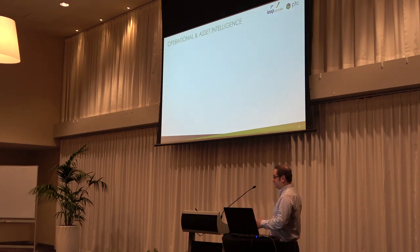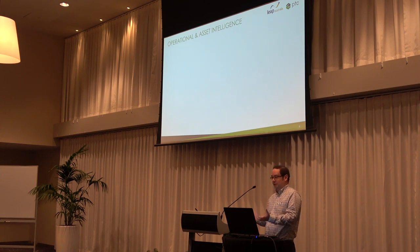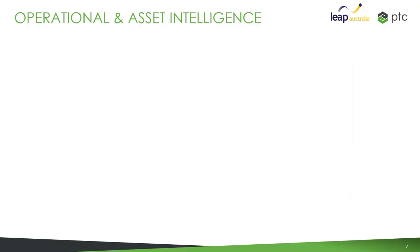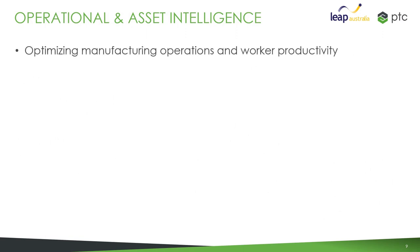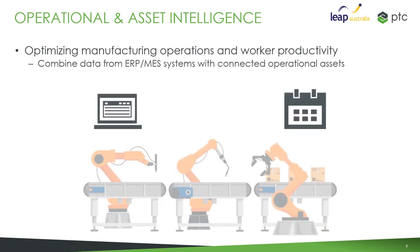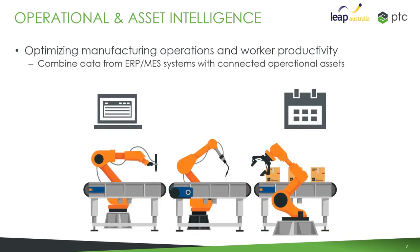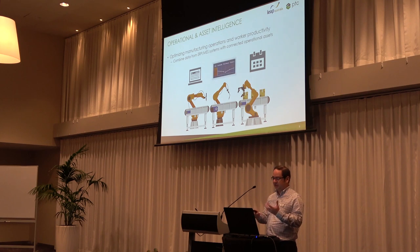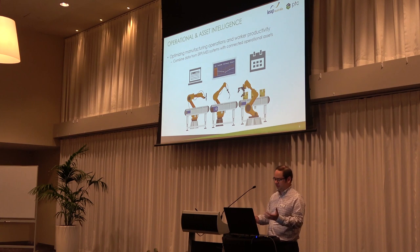On the operational asset intelligence side, we're really getting into the Industry 4.0 side of things - the factory floor. We're looking at optimising manufacturing operations, work productivity, things like OEE. We're combining data from different systems with connected operational assets like robotic equipment to generate better insights and improve OEE. It's really all about what Industry 4.0 is about.